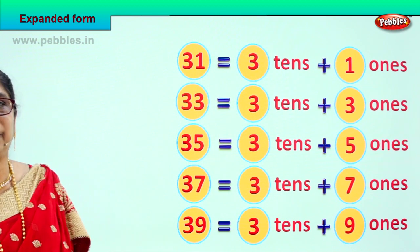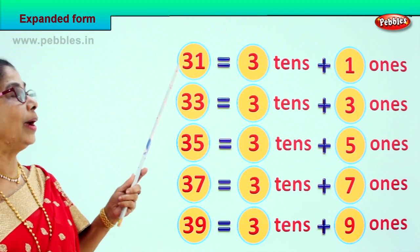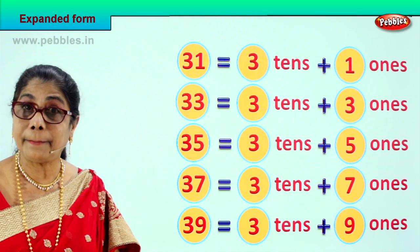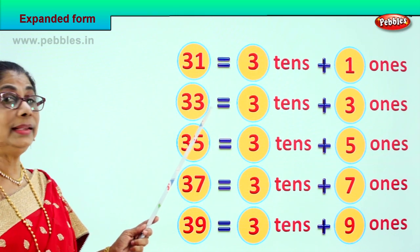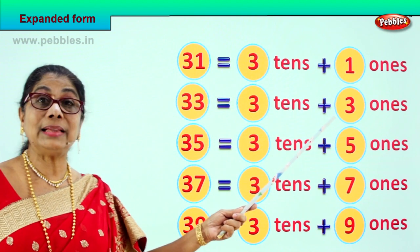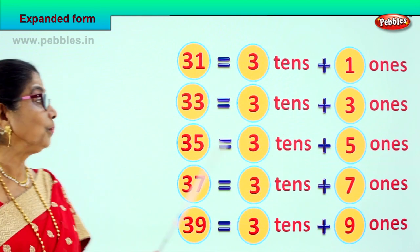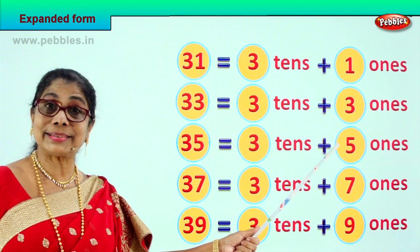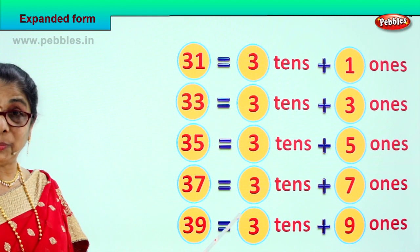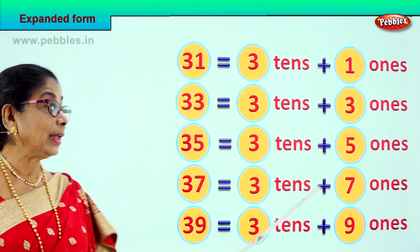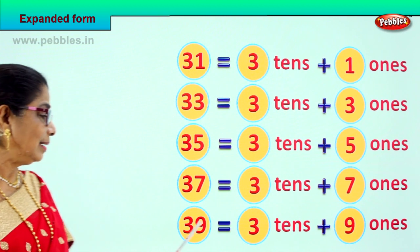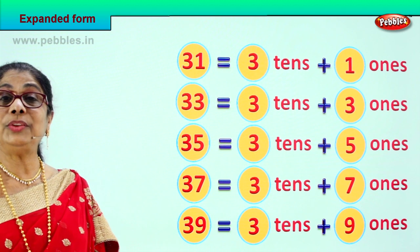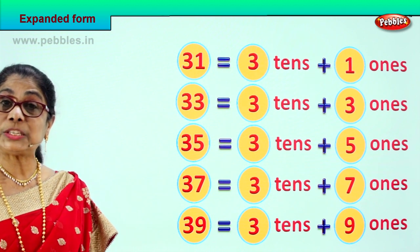Let's look at it all again. 31 is equal to 3 tens plus 1 one. 33 is equal to 3 tens plus 3 ones. 35 is equal to 3 tens plus 5 ones. 37 is equal to 3 tens plus 7 ones. 39 is equal to 3 tens plus 9 ones. Did you enjoy learning expanded form?